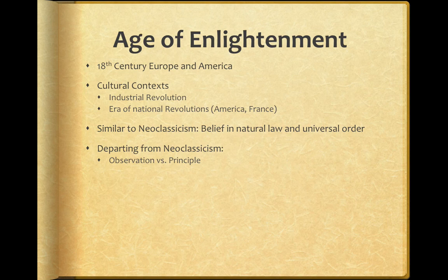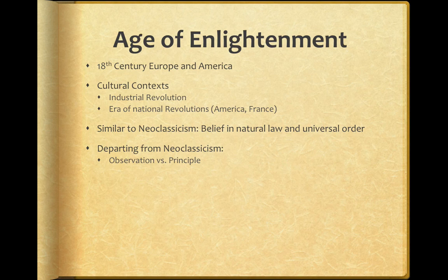The Age of Enlightenment mentality shifts away from just accepting that principle — instead, they test it with specific observations. For example, there was a long-standing principle of bleeding someone when they're sick, because the theory was their humors were out of balance and they had too much blood. An Age of Enlightenment person would observe that bleeding people has no effect on their fever and in fact frequently makes them more sick. This is a big shift away from doing things the way they've always been done and toward a scientific, rational process of observation and drawing conclusions.